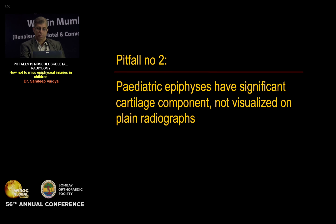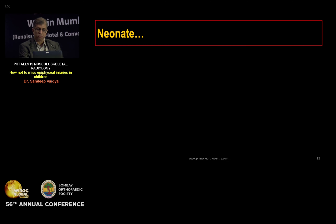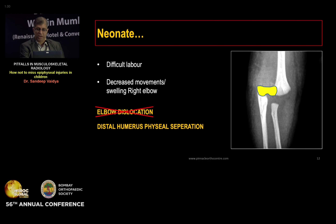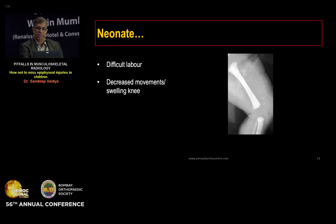The second pitfall is that pediatric epiphyses have a significant cartilaginous component, and many times the fracture line passes through the cartilage. Consider a neonate born after difficult labor with elbow swelling and decreased movements. The obvious diagnosis appears to be dislocation of the elbow; however, elbow dislocation is not reported in neonates in literature. If we consider that the distal humeral physis is completely cartilaginous, this becomes a distal humerus physeal fracture, not a dislocation.